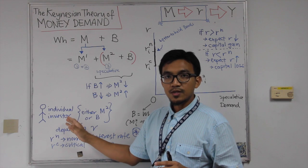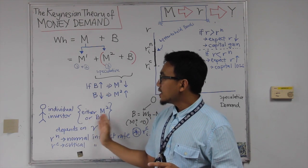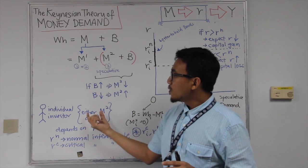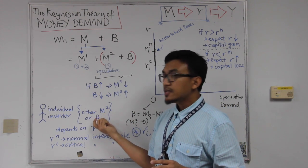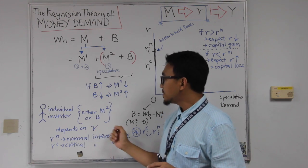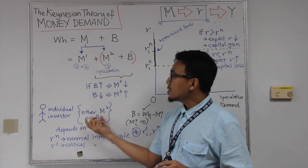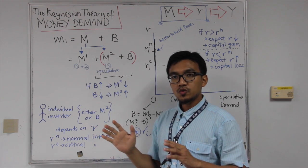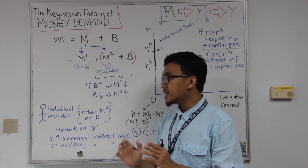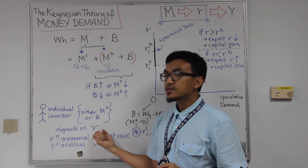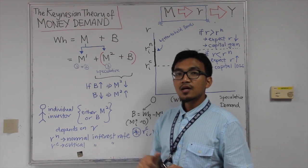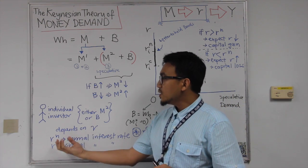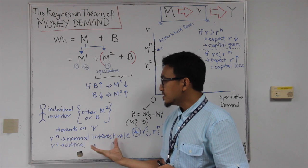An individual investor, for speculative reason — the third reason — will either hold money or bonds. What will decide whether the individual investor should hold bonds or money for speculative reason? This will depend on interest rate. Keynes argued that, firstly, we need to know that there will be a normal interest rate RN and a critical interest rate RC.